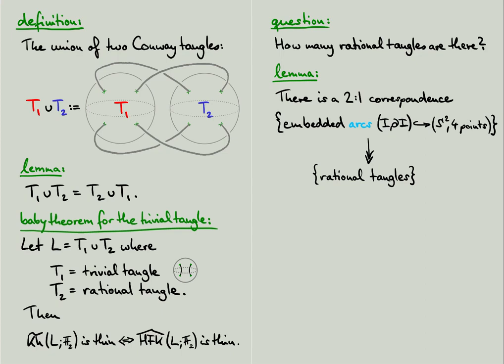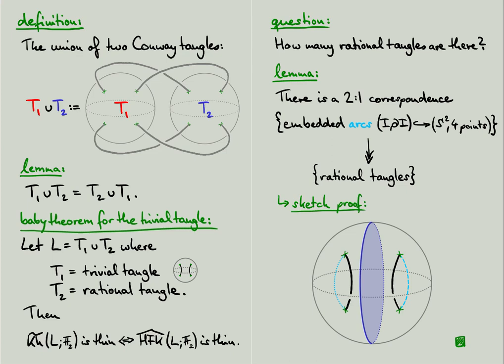How do we see this? Well, the proof is essentially this picture. For every rational tangle, there exists a disk which separates the two tangle strands. Its boundary is an embedded circle in the sphere which separates the two pairs of punctures, and each pair of punctures is connected by an arc which is unique up to homotopy. Conversely, the tangle is obtained from these arcs by pushing them into the three-ball. So indeed, we get a two to one correspondence.